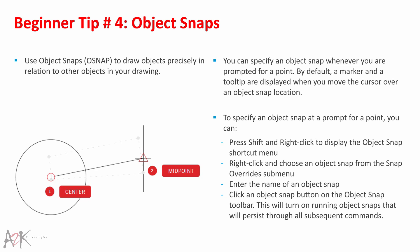Beginner Tip 4 – Object Snaps. Use object snaps to draw objects precisely in relation to other objects in your drawing. For example, you can create a line from the centre of a circle to the midpoint of another line. You can specify an object snap whenever you are prompted for a point. By default, a marker and tooltip are displayed when you move the cursor over an object snap location. To specify an object snap, press Shift and right-click to display the object snap shortcut menu, right-click and choose from the snap override submenu, enter the name of an object snap, or click an object snap button on the object snap toolbar. This will turn on running object snaps that persist through all subsequent commands.